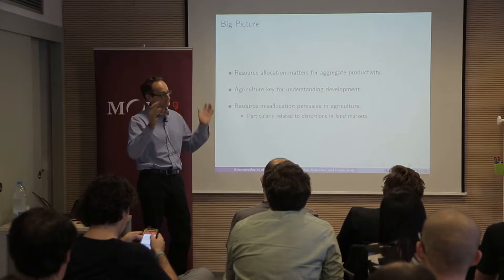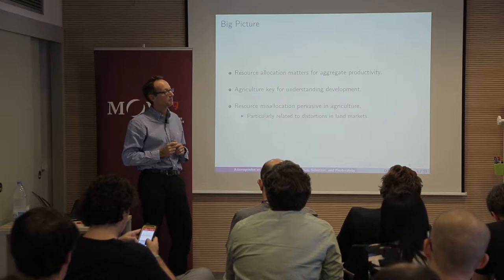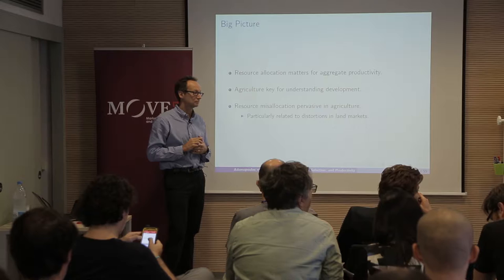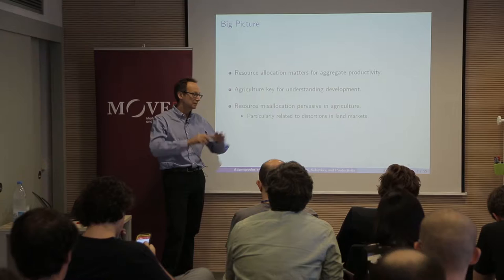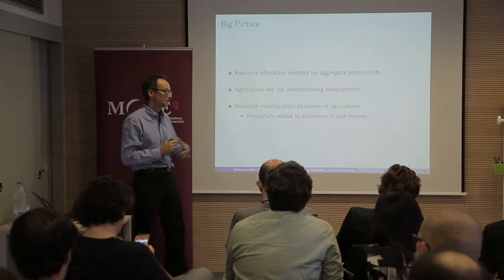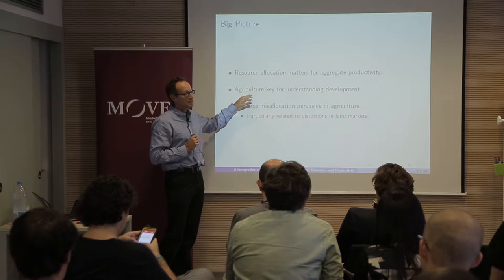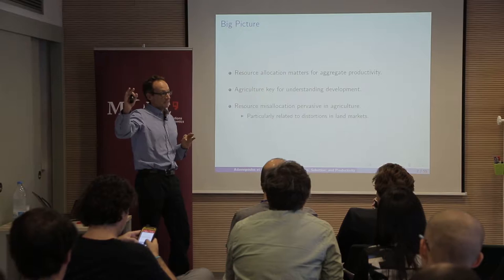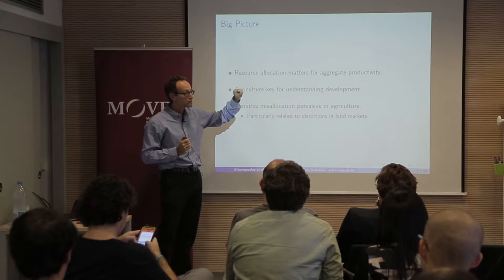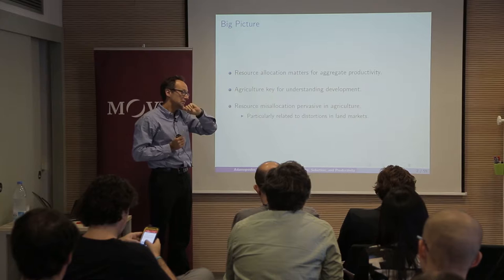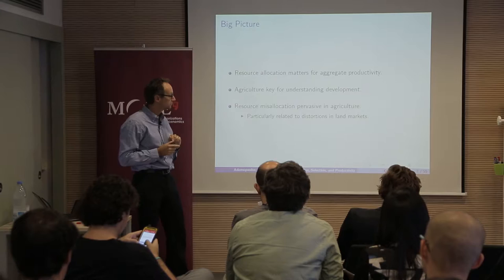Poor countries are unproductive in both sectors, but the relative productivity in agriculture is much lower in the agricultural sector relative to rich countries. Poor countries may be better at primary products as opposed to complex industries, but overall the gap in agricultural productivity relative to non-agriculture is much larger in poor countries. The contribution of agriculture and the fact that most labor is allocated there are both very important.